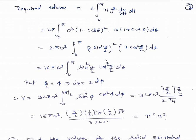This equals 2πa³∫[0 to π]. Now (1 − cos θ) can be written as 2sin²(θ/2) and (1 + cos θ) as 2cos²(θ/2). So V = 16πa³∫[0 to π] sin⁴(θ/2)·cos²(θ/2) dθ. Put θ/2 = φ, so dθ = 2dφ, giving volume = 32πa³∫[0 to π/2] sin⁴φ·cos²φ dφ.